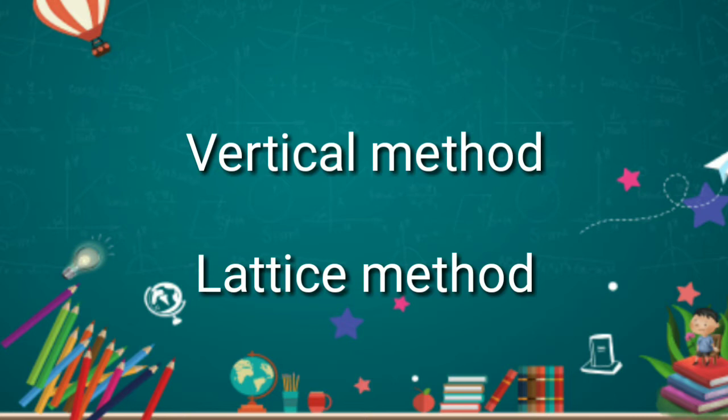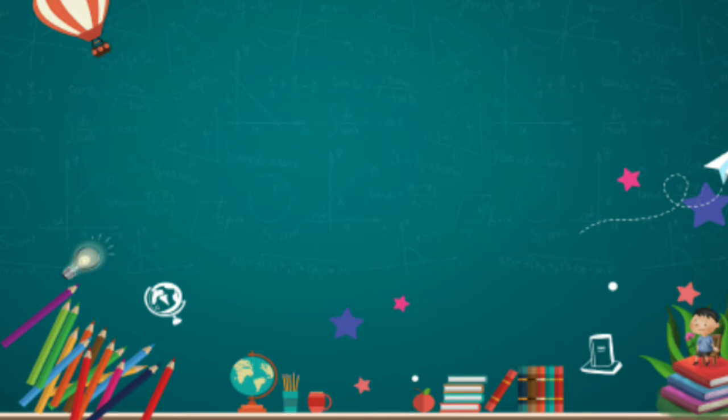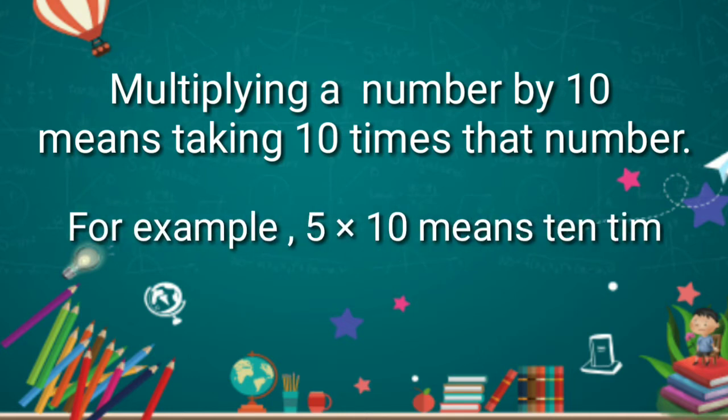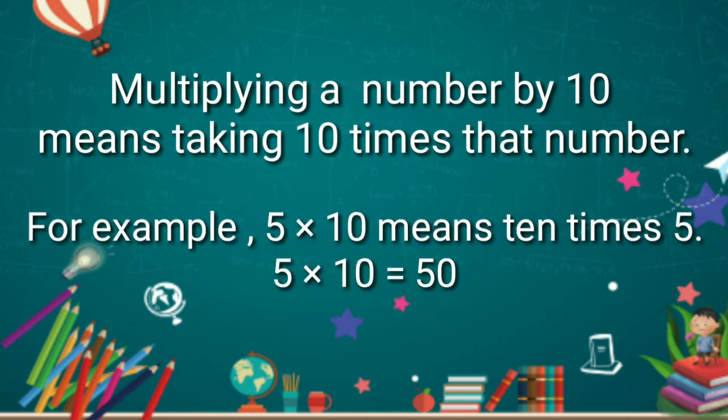Let's see some examples of multiplication. Multiplying a number by 10 means taking 10 times that number. For example, 5 multiplied by 10 means 10 times 5. 5 multiplied by 10 is equal to 50.